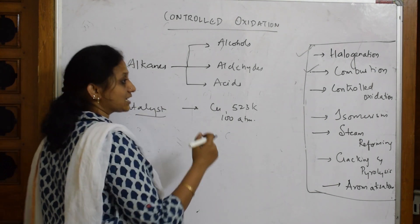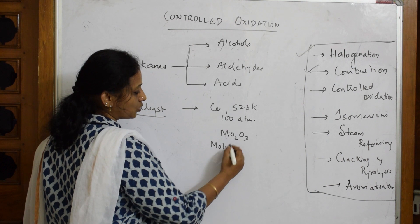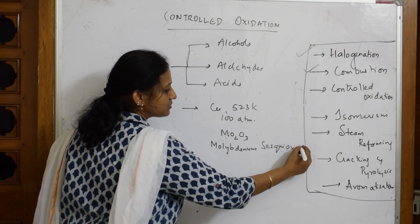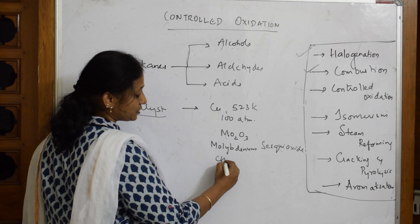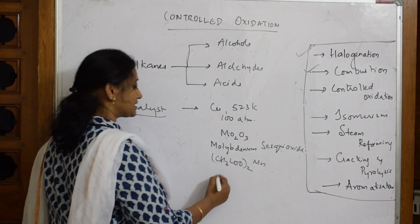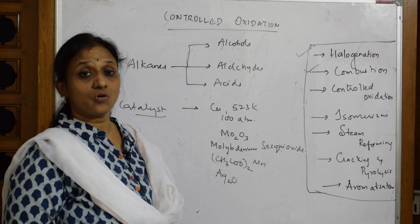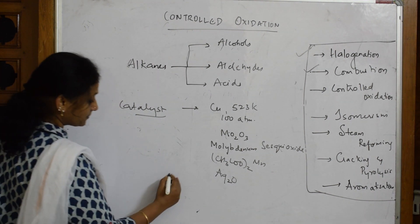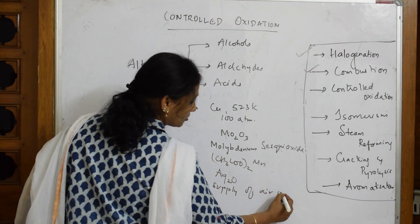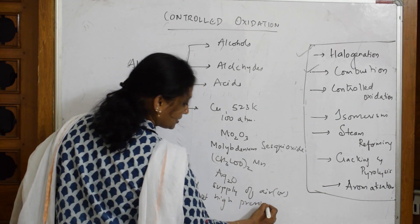I am going to use one more catalyst, Mo2O3, molybdenum sesquioxide. Next catalyst which I am going to use is manganese acetate. Next catalyst, silver oxide. Apart from all these catalysts, we are also going to use limited supply of air or oxygen at high pressure.